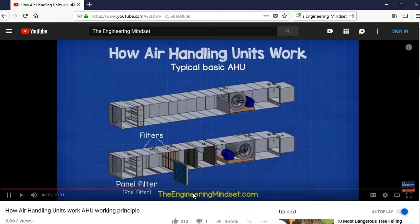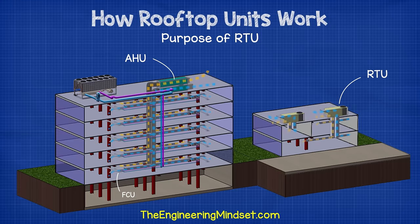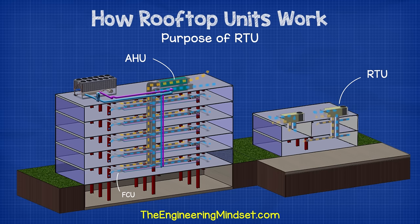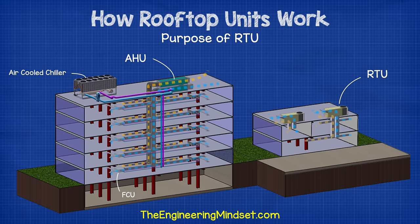In a previous video we looked at air handling units or AHUs — links are in the video description. Rooftop units are a type of air handler. The main difference is that they are usually more compact and always installed on the roof, so they need to be more robust and weatherproof to deal with sun, rain, snow, wind, etc. Additionally, AHUs are often connected to central plants such as chillers and boilers, but RTUs are self-contained and have everything they need all in one unit.